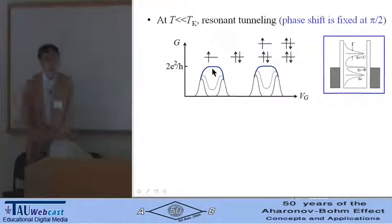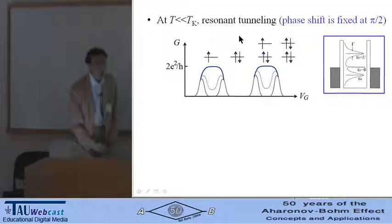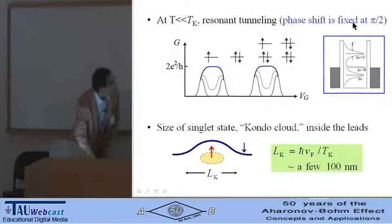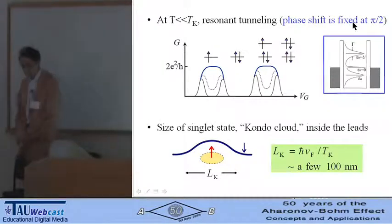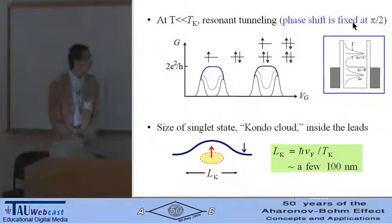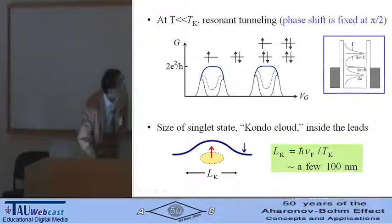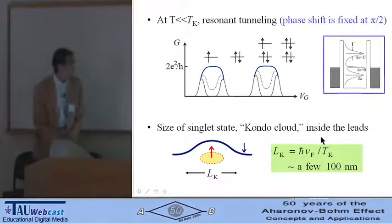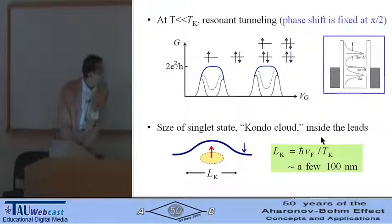In other words, a phase shift accompanied by the transport is fixed at half of pi. Size of the singlet state, so-called Kondo cloud, is given by Fermi velocity divided by Kondo temperature. It's very large, a few hundred nanometers inside the lead.